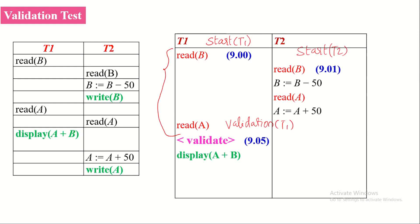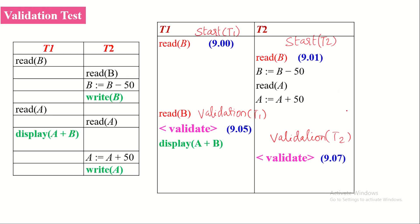Once all read operations are executed, the transaction enters the validation phase. Before performing its final write operation, T1 enters the validation phase and a validation timestamp is maintained, indicating the time it entered validation. The validation test for T1 will be successful because there is no other transaction that started before T1's read and execution phase, so it proceeds to its next operation. Similarly, for T2, all read operations are complete and only write operations remain. T2 must now successfully meet the validation test. Accordingly, T2 is permitted to enter the validation phase and its timestamp is also maintained.